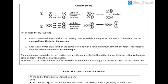Let's talk about collision theory. The collision theory says that in order for a reaction to take place, particles need to collide — they need to come together — and when they're colliding, they need to collide with proper orientation. The more collisions we have, the faster the reaction is going to be, because more collisions means that the likelihood of collisions being in the correct orientation is greater.